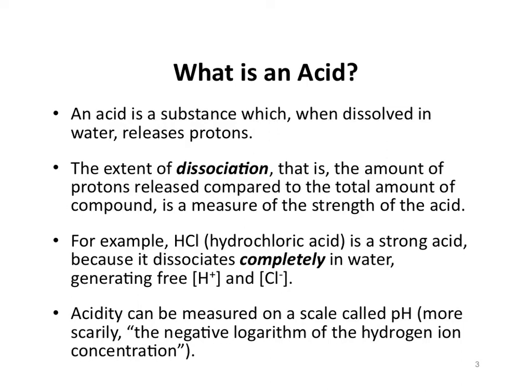If ionic compounds can dissociate, then what exactly is an acid? Acids are simply substances that release protons — which means they must also be dissociating, breaking apart. If I have a substance capable of releasing H+, a proton, due to dissociation, it is acting as an acid. The amount of dissociation will be proportional to the strength of the acid.